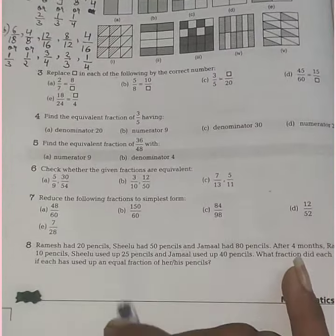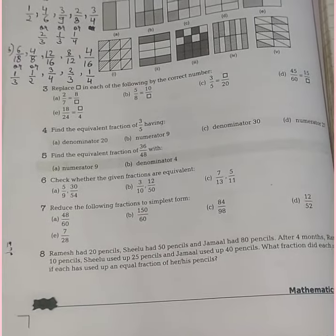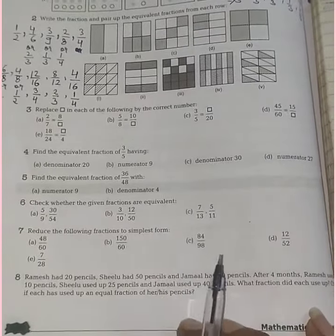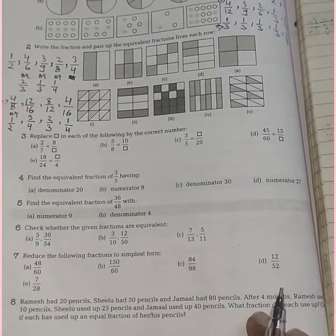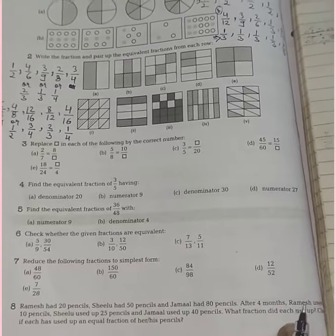Exercise 7.3, Question 8: Ramesh had 20 pencils, Silu had 50 pencils, Jamal had 80 pencils. After 4 months,